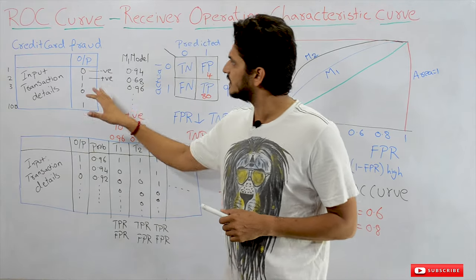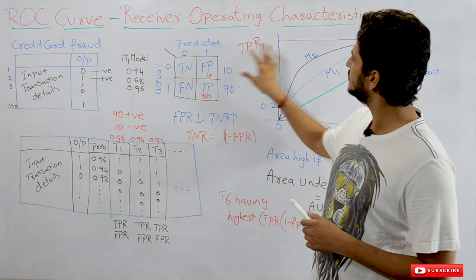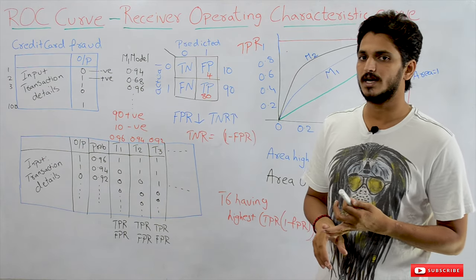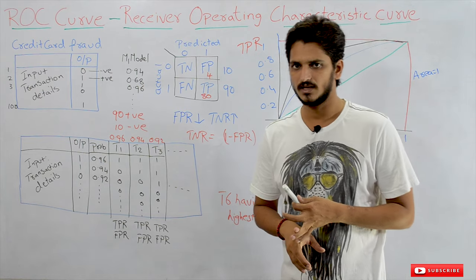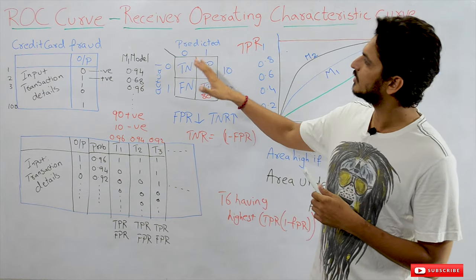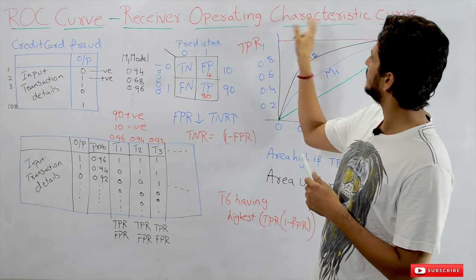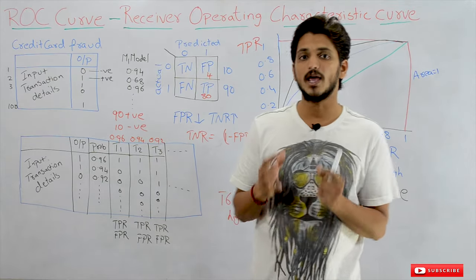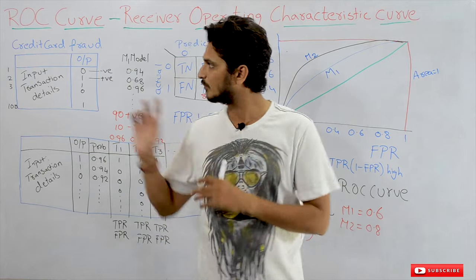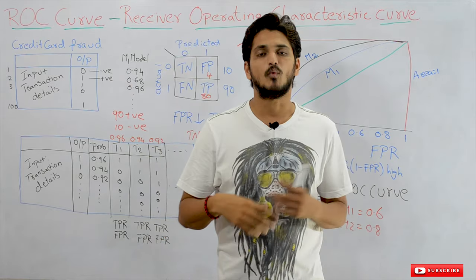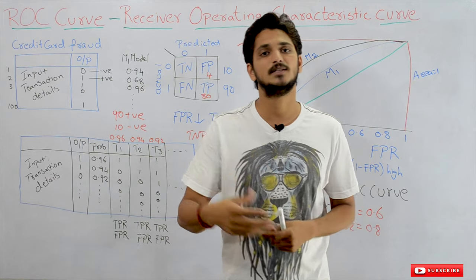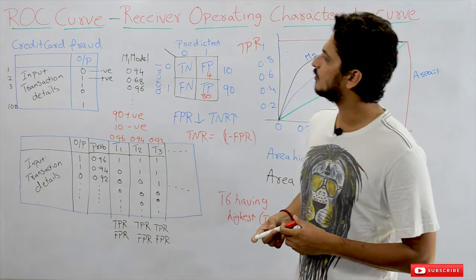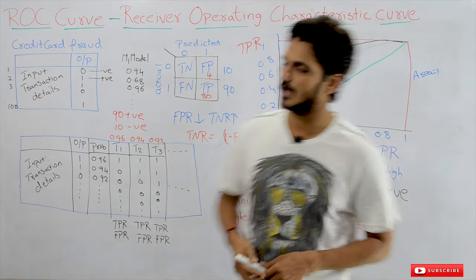First we will refresh the concepts discussed in our previous classes — the problems with imbalanced datasets and the confusion matrix class. Then we will discuss how to plot the Receiver Operating Characteristics Curve, and then why we are using this ROC curve and what its use is for imbalanced datasets. Now let's take an example and understand what the ROC curve is.